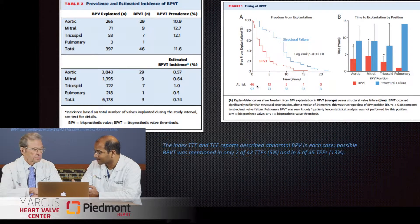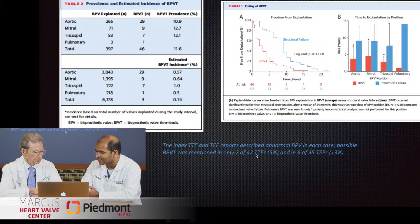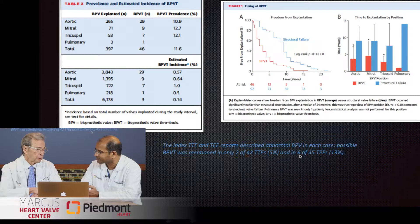I'd also wonder about AI or MR — as an echo person I'm used to seeing regurgitant lesions as well as stenotic lesions, where the thrombus looks like it's going to be predominantly stenotic. Did they comment on that in the paper? That's what they found — most of the thrombus cases were stenotic, while degenerative bioprosthetic cases were a combination of stenosis and regurgitation. Regarding echo accuracy: in the 46 patients where bioprosthetic valve thrombosis was confirmed on the explant, only two out of 42 transthoracic echos commented on the possibility of thrombosis, and only six out of 45 transesophageals commented on it.